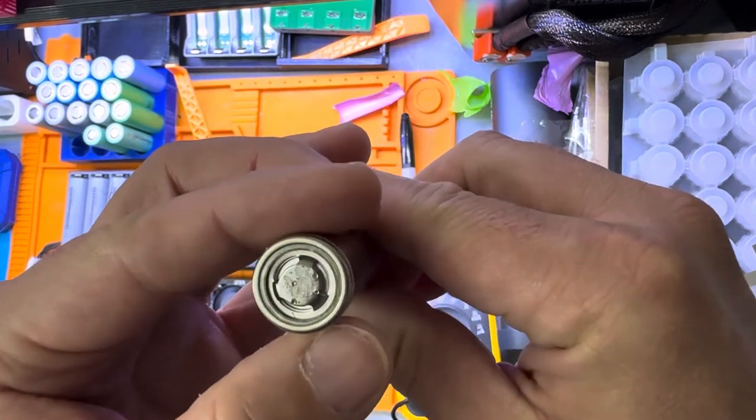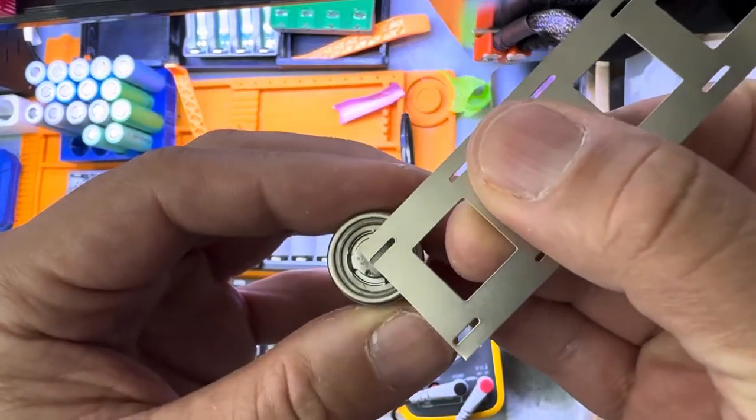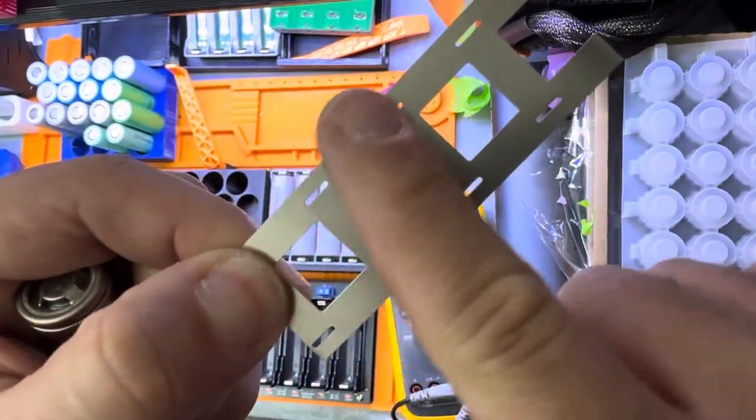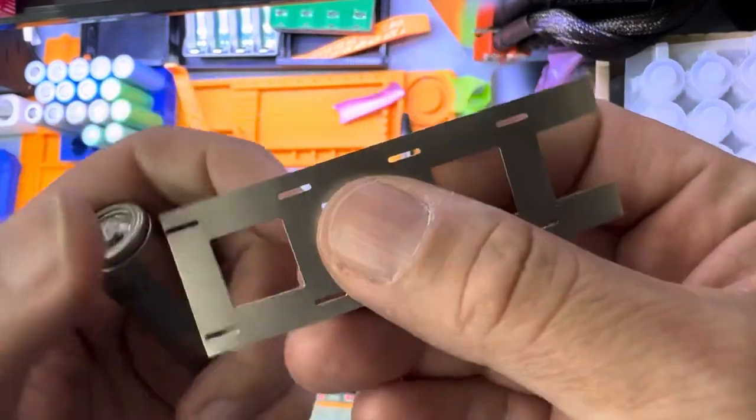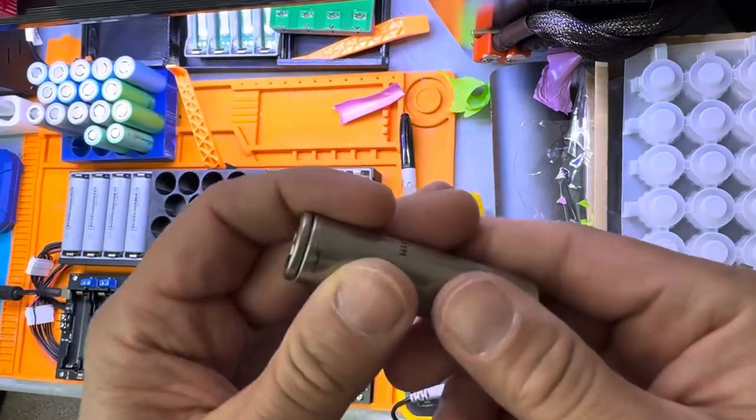We hope this helps you understand why you cannot spot weld close to the border, because you're going to short all that. Remember, you spot weld the center. As soon as you spot weld, all this becomes positive, and then it's so easy to short. So be careful and have a good one.